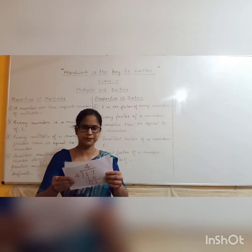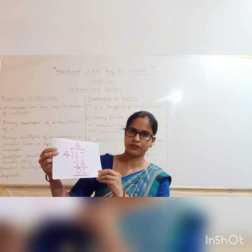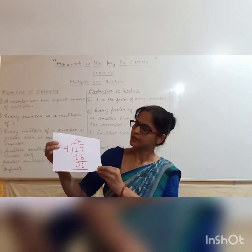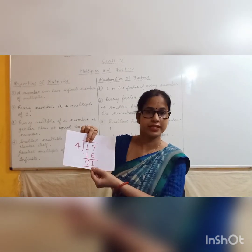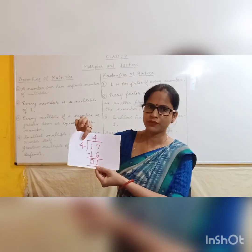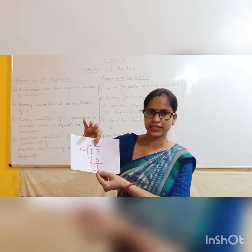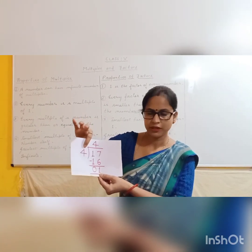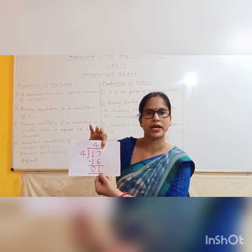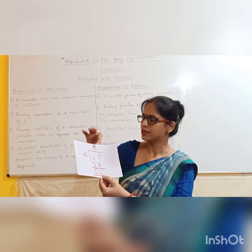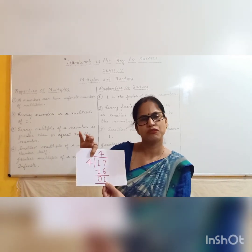Okay, see children, here I have done a division for you. You can see here, 17 is the dividend and 4 is the divisor. By dividing 17 by 4, we get the quotient 4 and remainder 1. So we can say 17 is not divisible by 4.